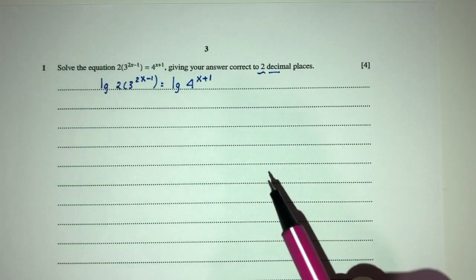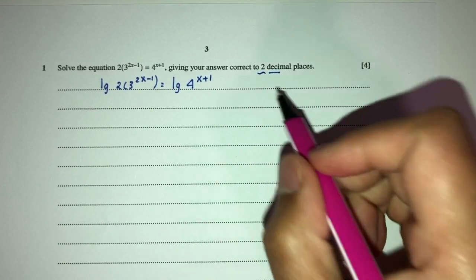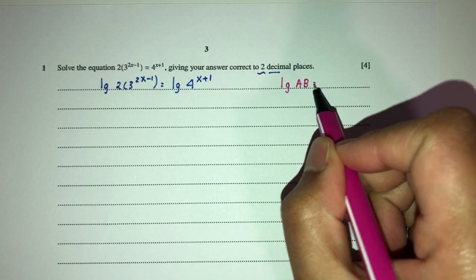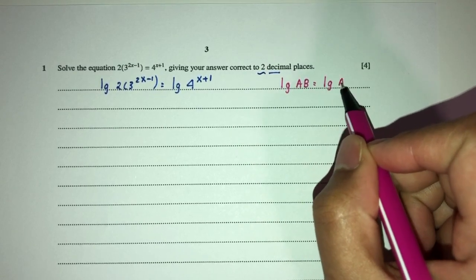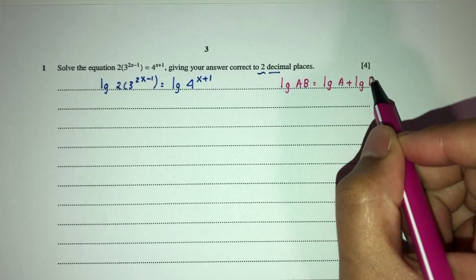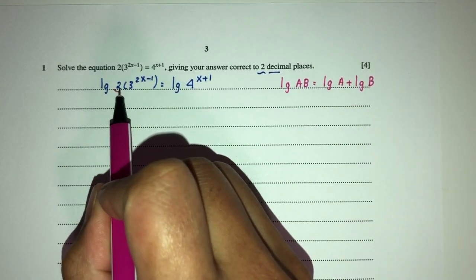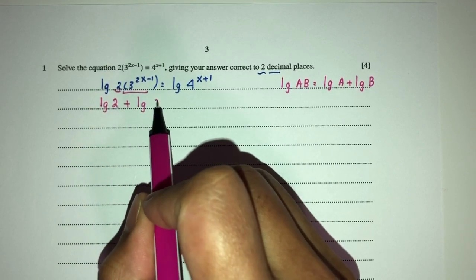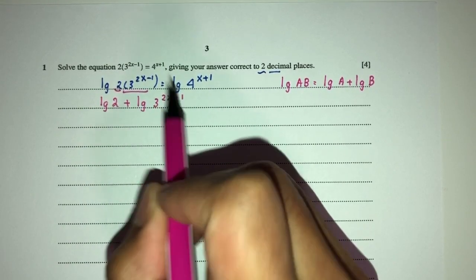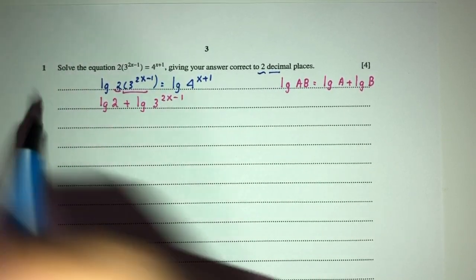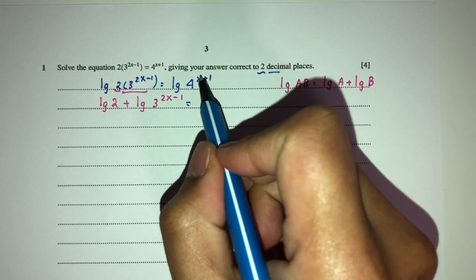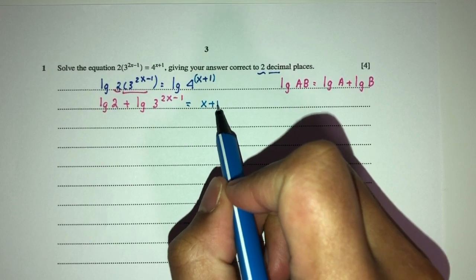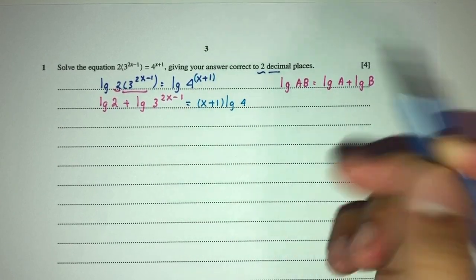Now, we have to use the laws of log to help you with that. For example, we should know log of a times b is equal to log of a plus log of b. So here we have 2 times this one, so that will be log of 2 plus log of 3 power 2x minus 1. Obviously equal to, now we have to send the power here in front, that will become x plus 1 log of 4.